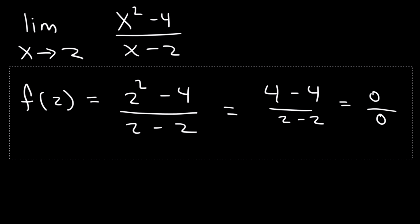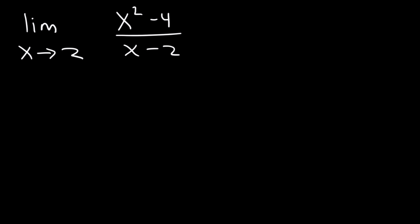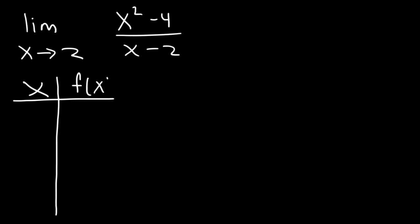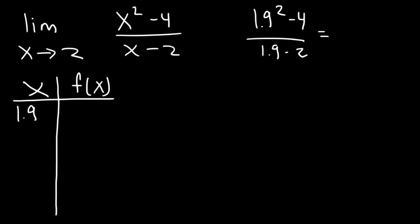So let's plug in a number that is not exactly 2 but something that's close to 2, and let's make a table. We're going to have our x values and the values of the function. Let's try 1.9: 1.9 squared minus 4 divided by 1.9 minus 2. If you type that in your calculator, you should get 3.9.